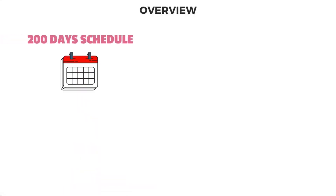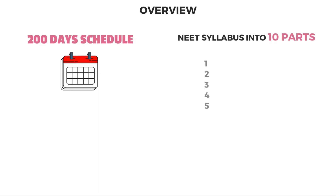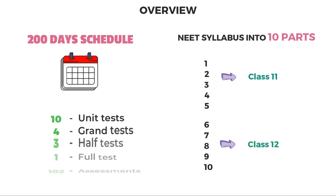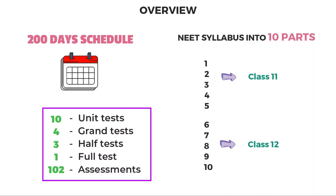Before looking at the schedule, let me give you an overview. This is a 200-day schedule. We have divided the NEET syllabus into 10 parts — the first 5 parts cover all chapters of Class 11 and the last 5 parts cover Class 12. In this schedule you have 10 unit tests, 4 grand tests, 3 half-syllabus tests, 1 full-syllabus test, and 102 daily assessment tests.